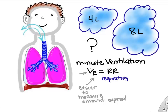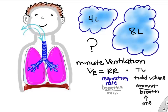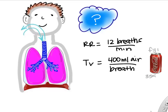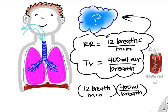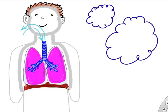What determines minute ventilation? To calculate it, we simply need to know your respiratory rate in breaths per minute and your tidal volume — the amount of air you breathe in or out per breath. If your respiratory rate is 12 breaths per minute and your tidal volume is 400 mils per breath — about a soda can worth of air — then your minute ventilation is 4,800 mils or 4.8 liters per minute. This tells us how much air you're breathing in or out, which is important to get oxygen into your lungs and CO2 out.